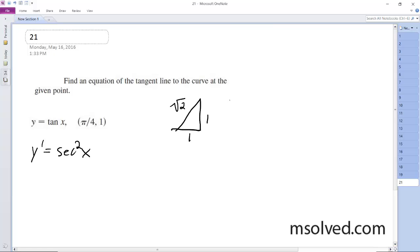Secant, well, secant's 1 over the cosine. So this is going to be hypotenuse over one of the sides. So it's going to be root 2 over 1.